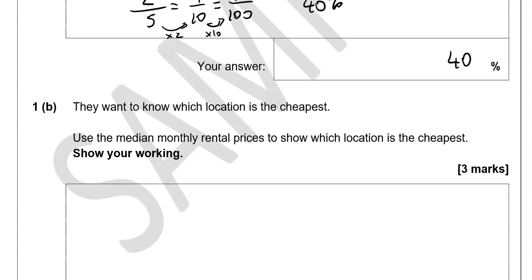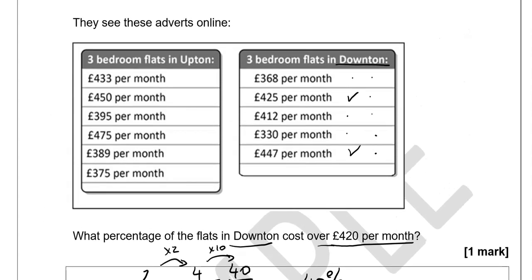The next part asks which location is cheapest. Use the median monthly rental price to show which location is cheapest. So we're going to work out the median of the prices for the two towns separately and then compare. Starting with Upton, putting them in order from smallest: £375, then £389, £395, £433, £450, £475.